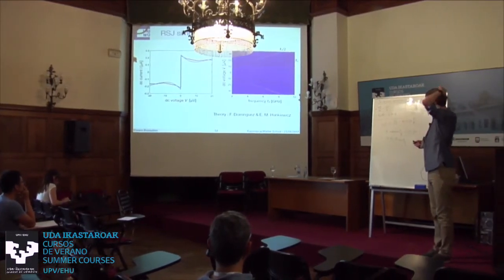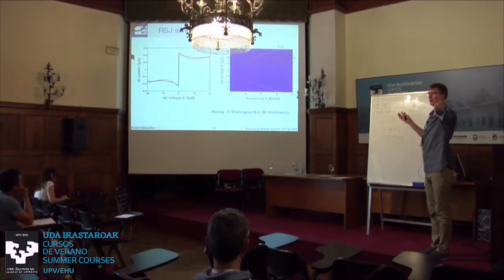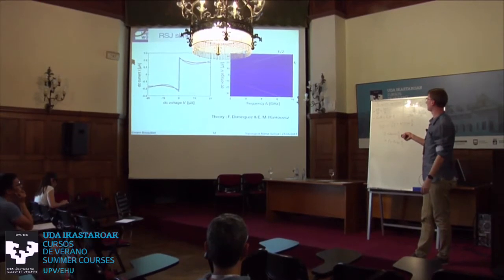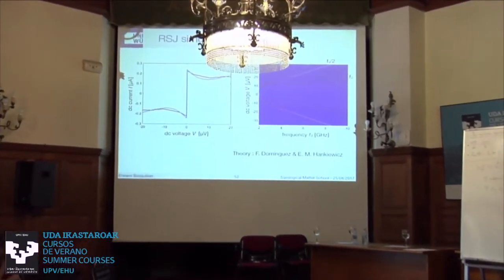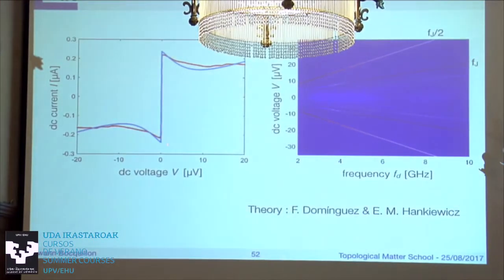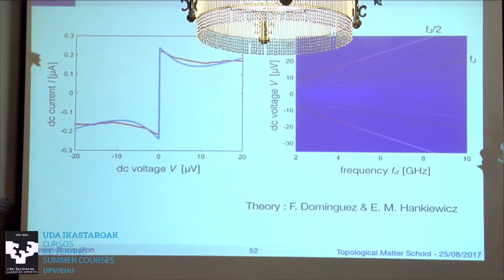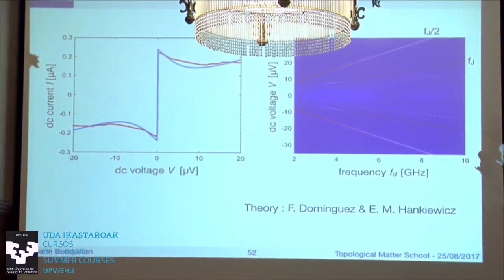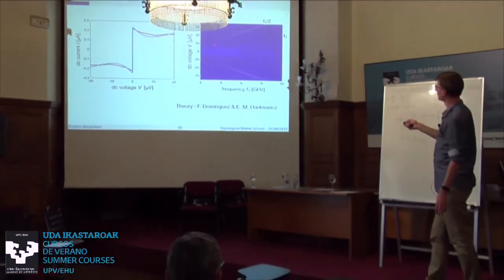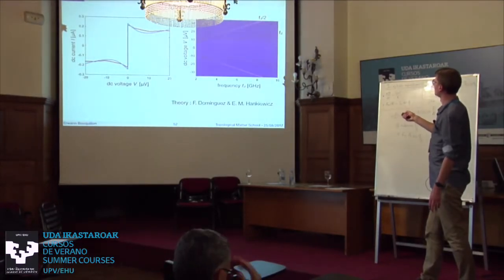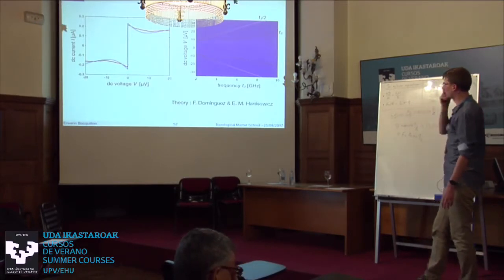Using the RSJ model (with Fernando Dominguez and Evelina Aronkiewicz), we simulate the IV curve and emission spectrum and compare with our data in red. The simulations reproduce the data qualitatively: at low frequency the 4π periodicity dominates with emission at f_J/2 and nothing at f_J; at higher frequency the 4π contribution fades and 2π periodicity recovers.